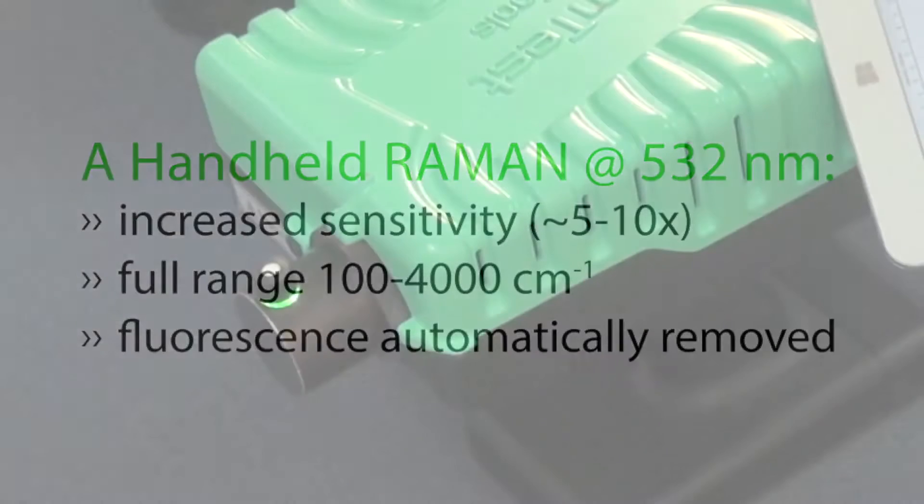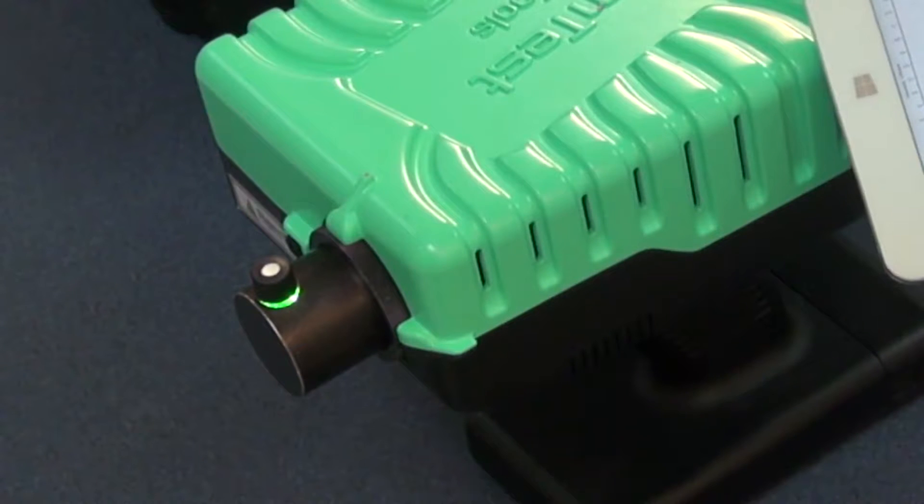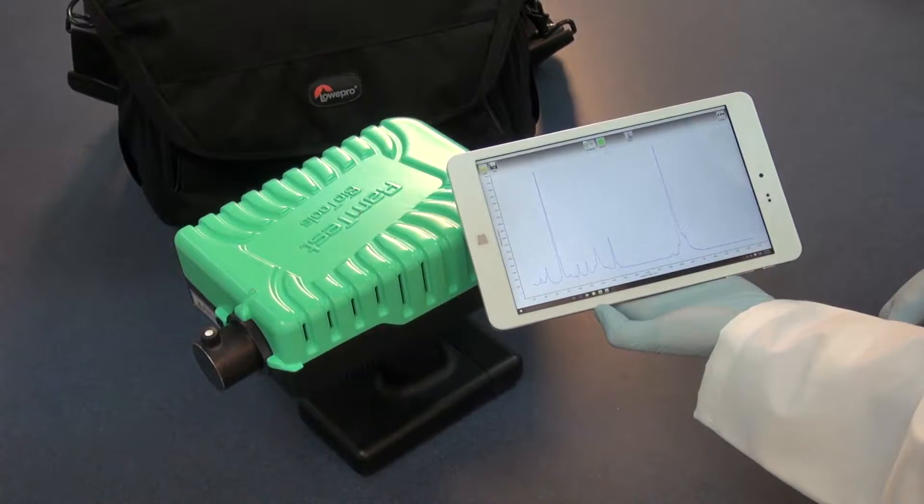Weighing under five pounds, it can measure in less than three seconds. That's five times faster analysis than other handheld units.